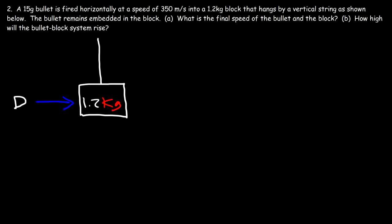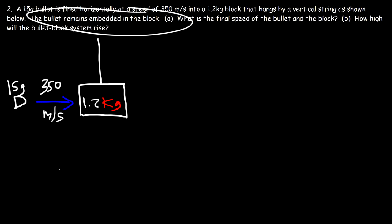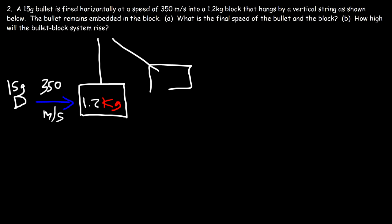Now let's move on to the second problem. A 15 gram bullet is fired horizontally at 350 meters per second into a 1.2 kg block that hangs by a vertical string. The bullet remains embedded in the block, so the block will rise. We need to find: part A, the final speed of the bullet and block after the collision; and part B, how high the bullet-block system will rise.